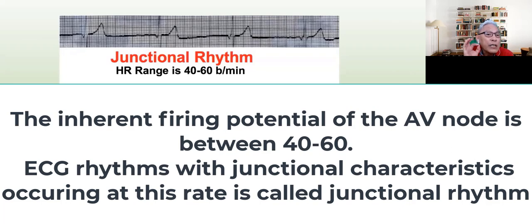The normal inherent rate of the AV node is between 40 to 60 beats per minute. So that if we see a rhythm that has the characteristics of a junctional beat, we would call that a junctional rhythm.